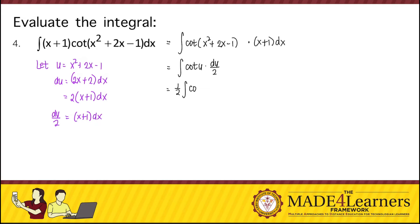Put the constant outside, 1 half integral of the cotangent of u du, and applying integration formula, that's 1 half times negative ln of cosecant u plus c.